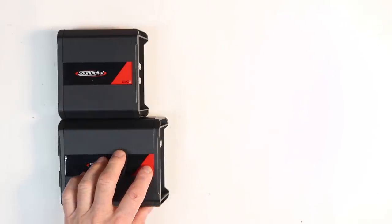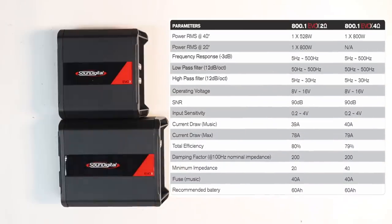Moving on to the 800.1. The specs are at 4 ohms 800 watts. Frequency response is 5 to 500 hertz. Low pass filter is between 50 and 500 hertz. The high pass filter, also called the subsonic, is between 5 and 30 hertz. Operating voltage is 8 to 16 volts. Signal noise is 90 dBs. Input sensitivity is 0.2 to 4 volts. Current draw while playing music is 40 amps. Maximum current draw is going to be 79 amps. Total efficiency of the amplifier is 79% and they recommend a 40 amp fuse.